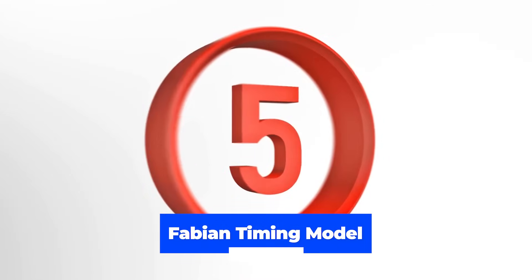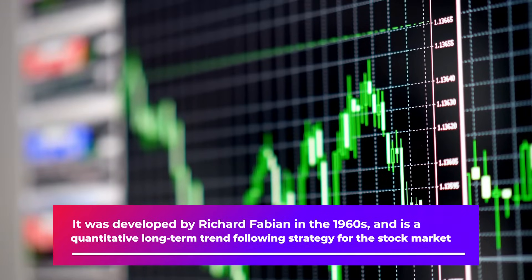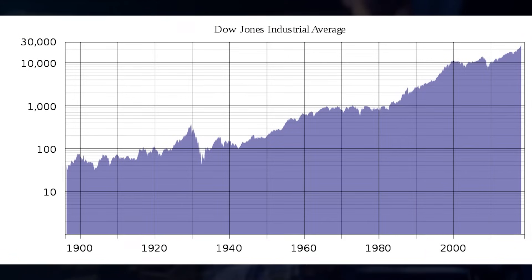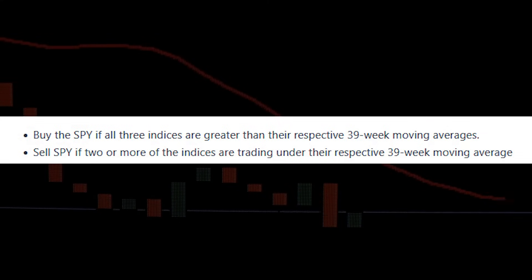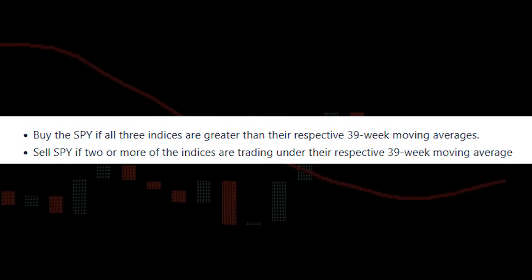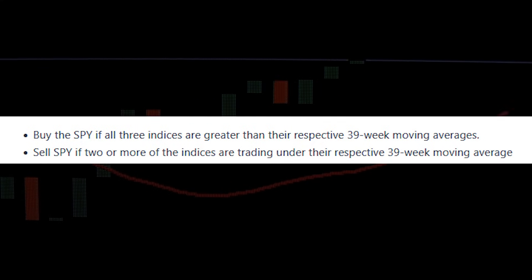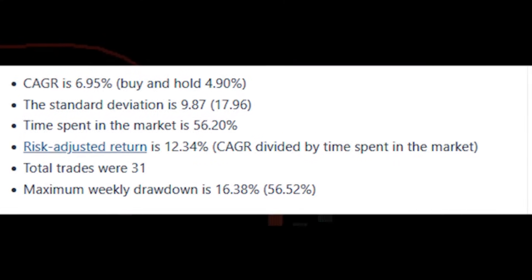The fifth systematic trading strategy is called the Fabian Timing Model. It was developed by Richard Fabian in the 1960s and is a quantitative long-term trend-following strategy for the stock market. It's based on an intermarket signal between the S&P 500, the Dow Jones Industrial Average, and the utility sector. The buy and sell rules are simple and executed at the end of each week: if all three indices are above their 39-week moving average, be long S&P 500; sell when at least two indices are below the average. We coded the strategy in Python and it has outperformed S&P 500 by a wide margin since the year 2000, despite being invested approximately half the time. This is an easy strategy you can run automatically at the end of each week.